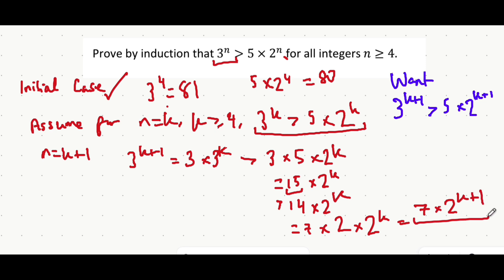That's useful because we definitely know that this is greater than 5 multiplied by 2 to the power of k plus 1, because of the fact that 7 is greater than 5.